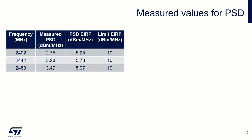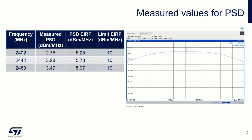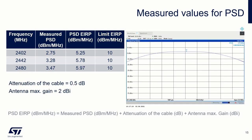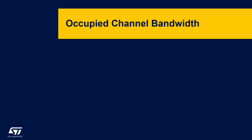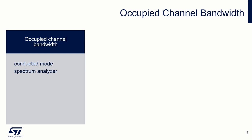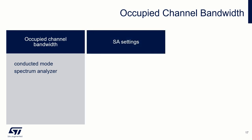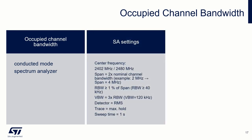We write down the results in a table and compare them — we can see there is enough margin to the limit. Now we measure the occupied channel bandwidth, which is the bandwidth that contains 99% of the signal. We will again use a spectrum analyzer in conducted mode. Measurements must be performed on two outer channels; activate the occupied bandwidth function and set it to 99%.